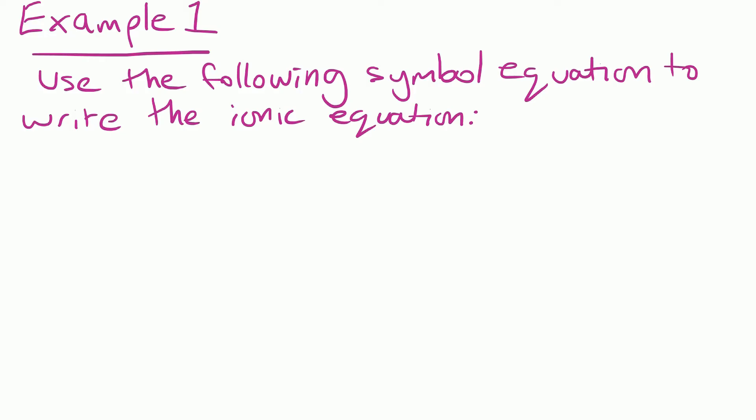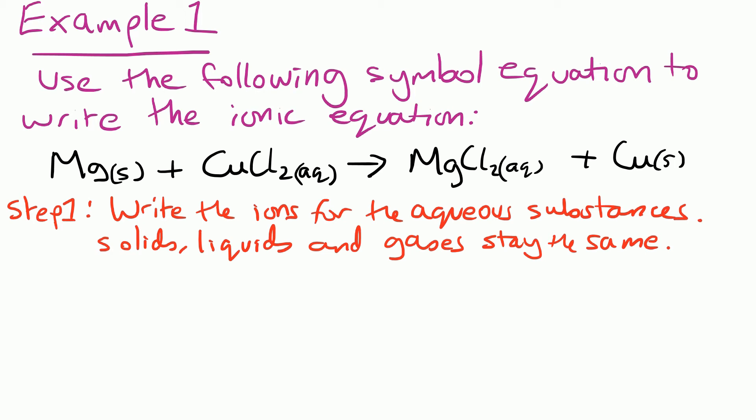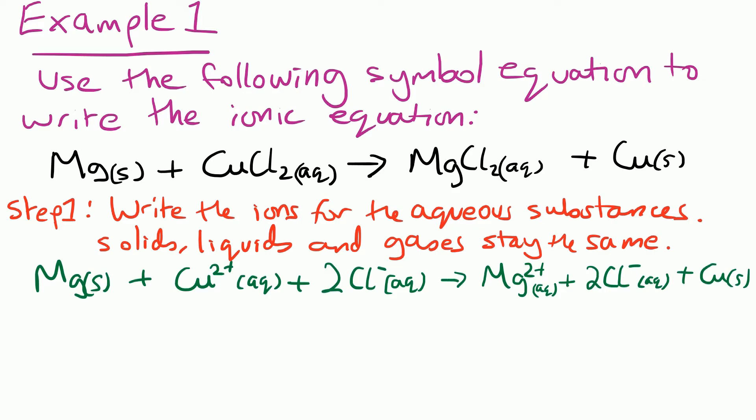Let's have a look at an example: use the following symbol equation to write the ionic equation. Step one is to write the ions for the aqueous substances — they're the ones with the little 'aq' state symbol after them. Solids, liquids, and gases stay the same. So Mg is a solid, so that stays the same. In CuCl₂ we've got Cu²⁺ ions and we've also got two Cl⁻ ions — chloride is in group seven so it's a one-minus. Then the next aqueous formula is MgCl₂, so we write the ions for that: Mg²⁺ and two Cl⁻ ions. The Cu stays the same because that's a solid.